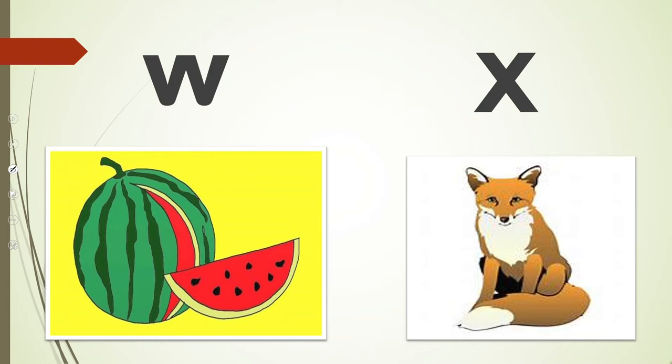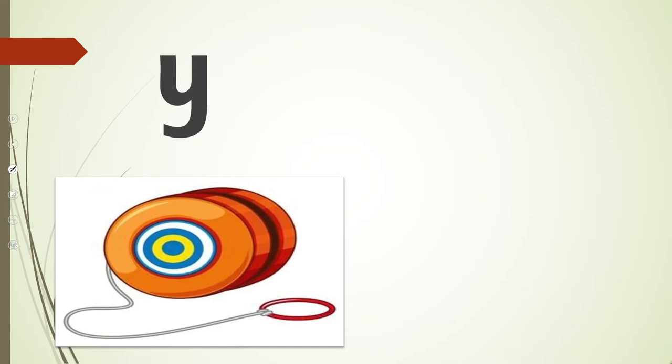V, van. W, watermelon. X, fox. Dear children, the X sound in fox comes at the end. So this is a fox and the sound is X. Y, yoyo. Z, zebra.